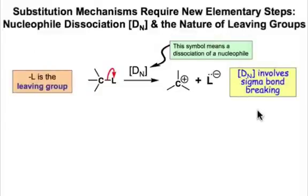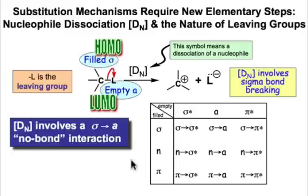The elementary step known as the nucleophile dissociation or DN step only involves sigma bond breaking, and can be written by the single curved arrow shown here in which the bonding pair of electrons ends up on the leaving group L to make this anion. In terms of molecular orbital interactions, we would describe this as a filled sigma interacting with an empty A on the leaving group, so it's a sigma to A, and since there is no bonding interaction, we'd describe it as a sigma to A no bond interaction.